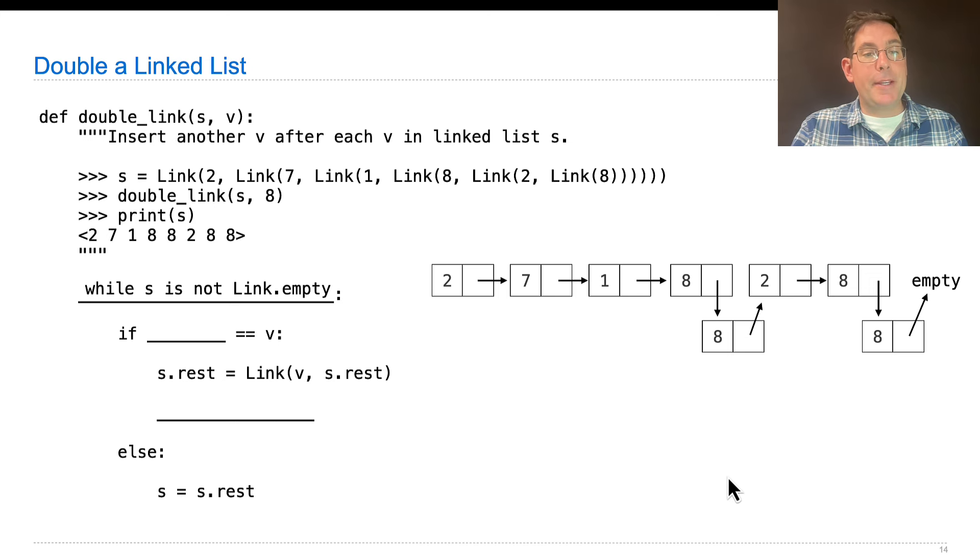Again we use a while statement. This time it's s that's advancing instead of i. s refers to one of these links. We change it with s equals s.rest, and we keep going as long as there might be another 8 there, which means as long as s is not empty. To look at the current number, we use s.first because s always refers to one of these links, and links have a first and a rest.